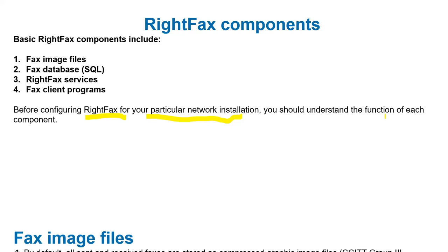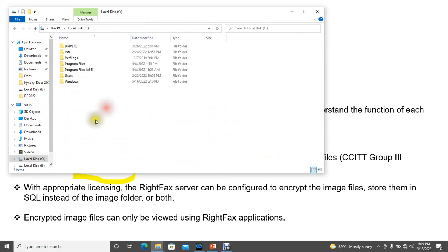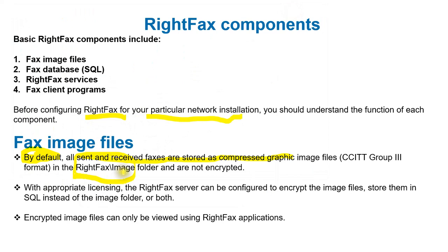First, let's look at fax image files. By default, all sent and received faxes are stored as compressed graphic image files. Without any specific configuration, whatever you are sending and receiving will be stored in a compressed graphic image file in a folder called 'image' inside your RightFax installation — typically at C:\RightFax\image. Those images will not be encrypted by default.